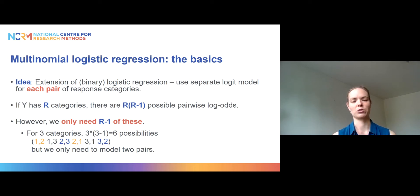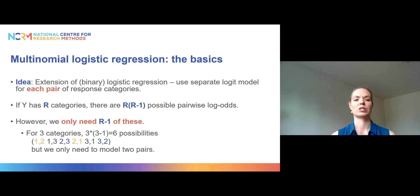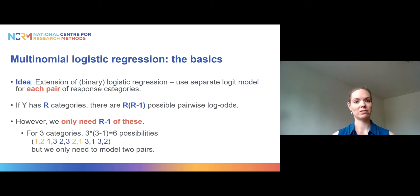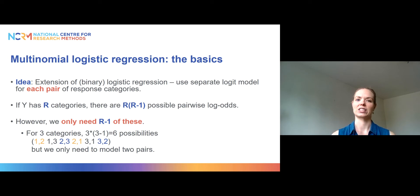If we have three categories in our outcome — for instance, voting Conservative, Labour, or some other party — there would be six possible pairings, but half drop out since one-and-two is the same pair as two-and-one. We actually end up modeling only two pairs, because we select one category as the baseline or reference category and only compare the other two outcomes to that category.